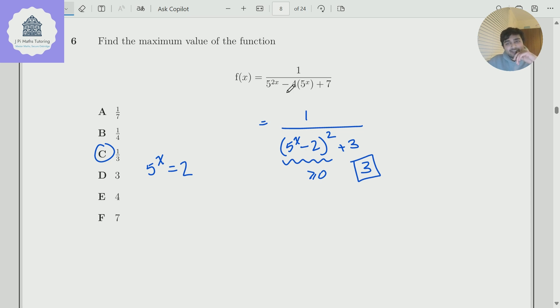They could have made this question a little bit harder if they'd made this a plus sign here. So if this was 5 to the 2x plus 4 times 5 to the x, and then that there would have been a plus and everything else would have been the same. Because now the minimum is no longer 3. The minimum of the denominator is no longer 3, because the bottom here can't be equal to 0. This thing in the bracket that's being squared can't be equal to 0.